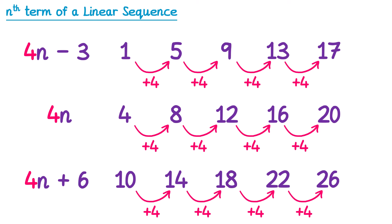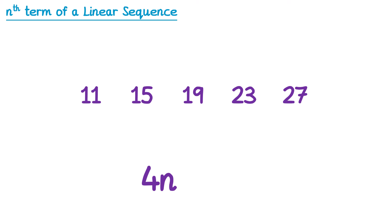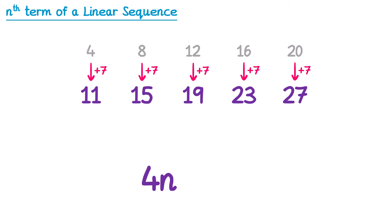We can use this idea to work out the nth term of any linear sequence. The first thing to do is look at the difference between the terms — this one is always add 4, which means the nth term must involve 4n. But 4n would be the multiples of 4, and our sequence doesn't start at 4. So we write the 4 times table above the sequence: 4, 8, 12, 16, 20. We then work out what we need to do to the 4n sequence to get to our sequence. How do we get from 4 to 11? That would be add 7. We check: 8 plus 7 gives 15. This works for all terms, so the nth term must be 4n plus 7.